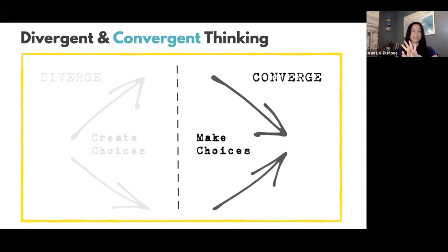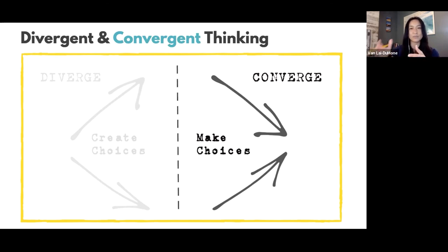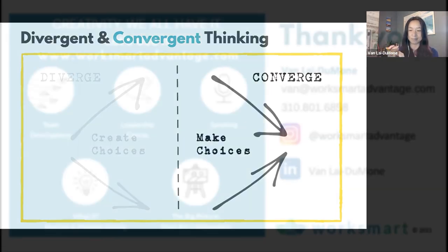Now you can pull from all your divergent ideas, mix and match them, collaborate them, put them all together, and come up with what will work for you now. This doesn't disregard all the other ideas — it doesn't mean they're not valid — but through the criteria you have, this is what you can accomplish in the moment with what you have and what you need.